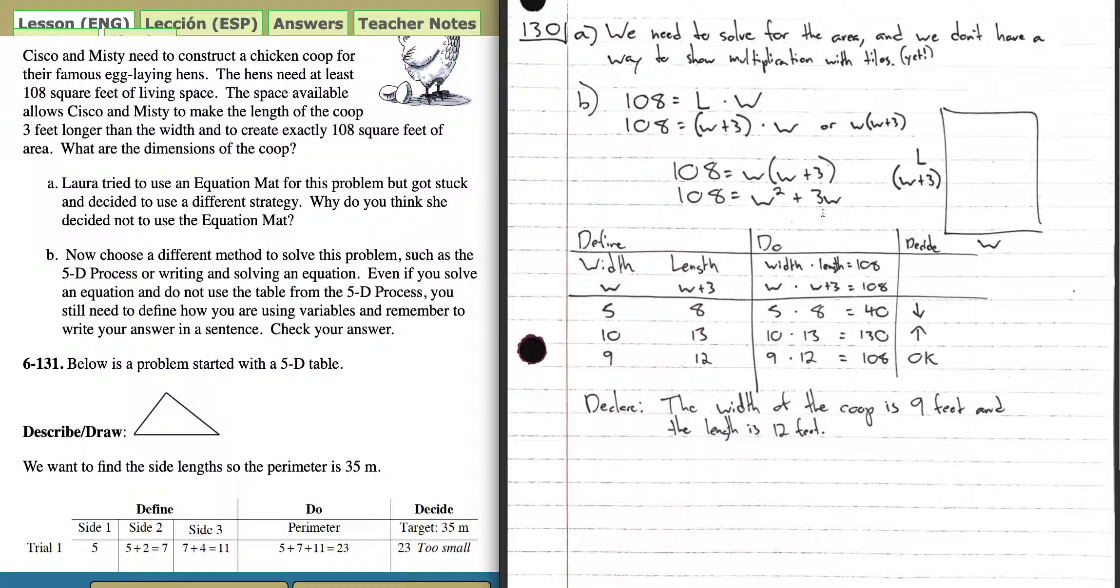So I thought, you know what, this might be easier to just plug in. I made my table where I had the width and the length. Width is W, length is W+3, and I just knew I needed to do the width times the width plus 3, and get 108. Then I tried 5 and 8, that's 40. 10 and 13, that's 130. Went down to 9 for my width and 12, and 9 times 12 is 108. So boom, there you go. The width of the coop is 9 feet and the length is 12 feet.